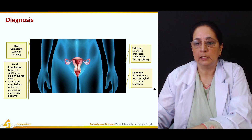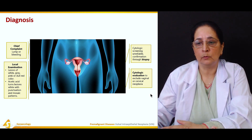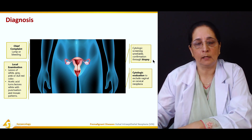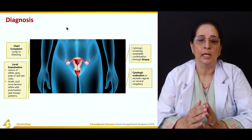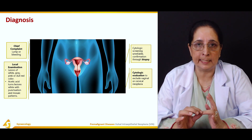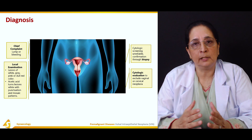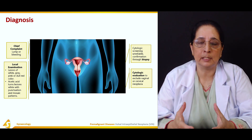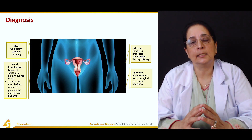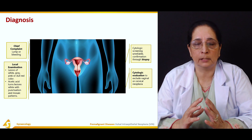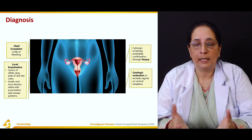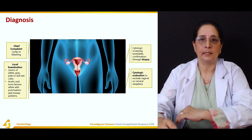Cytological evaluation is also performed to exclude vaginal or cervical neoplasia. So the diagnostic steps are: the patient presents with a lump or bleeding; on examination there is a lesion that is pink, bright red, or dull red; acetic acid testing converts the lesion to white with a mosaic pattern; then biopsy and cytological testing are performed.